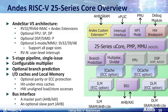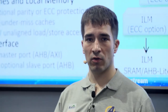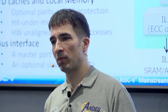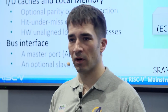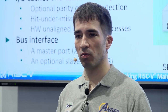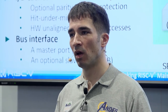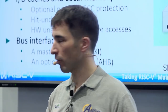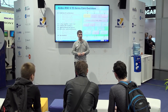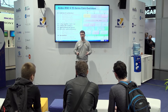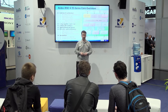The AndesCore A25 series is a five-stage pipeline. It features optional instruction and data caches as well as instruction and data local memories. All of this can be protected by ECC, which makes a big difference especially for customers targeting a seven-nanometer process. The bus interface supports AHB or AXI, and you can switch between them.